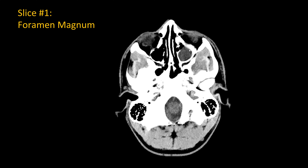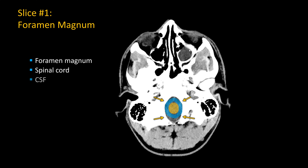Starting with the lowest level at the foramen magnum, you should be able to see centrally a soft tissue density spinal cord, which is surrounded by relatively hypodense CSF. If you see the foramen magnum filled with soft tissue density in an acute setting, you are probably seeing acute tonsillar herniation.